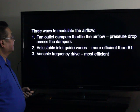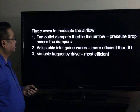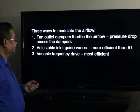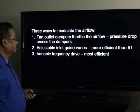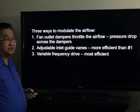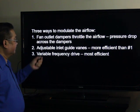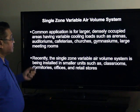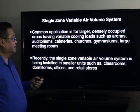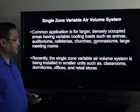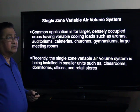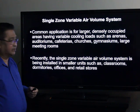There are three ways to modulate the airflow of the supply air fan. First, fan outlet dampers throttle the airflow, resulting in higher pressure drop across the dampers. Second, adjustable inlet guide vanes (IGVs), which are more efficient than the first. Third, variable frequency drives, which are the most favored option. Common applications are for larger densely occupied areas with variable cooling loads, such as arenas, gymnasiums, auditoriums, cafeterias, churches, and large meeting rooms. More recently, single-zone variable air volume systems are being used for smaller classrooms, offices, dormitories, and retail stores.